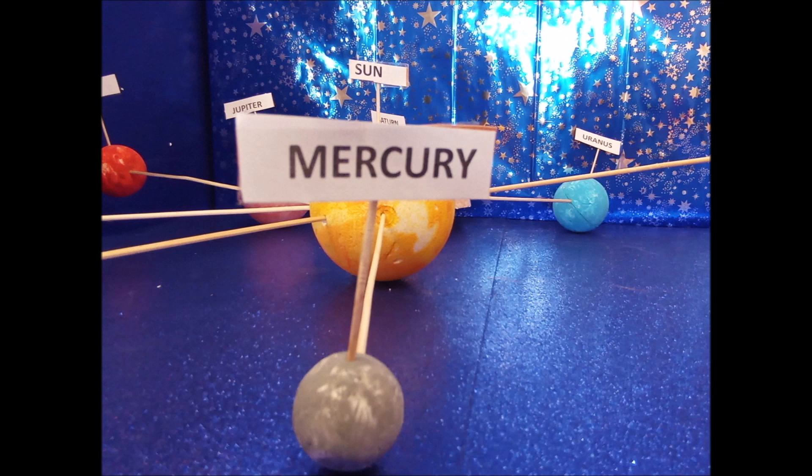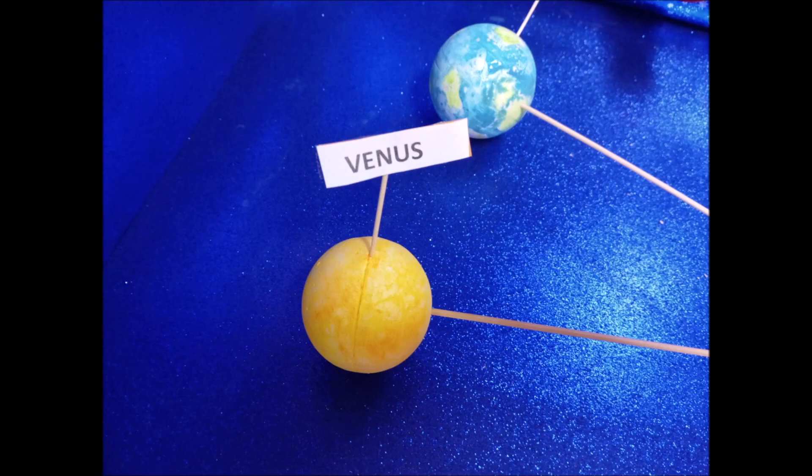Mercury is the smallest planet in our solar system and it's the closest to the sun. Venus is the hottest planet in our solar system.